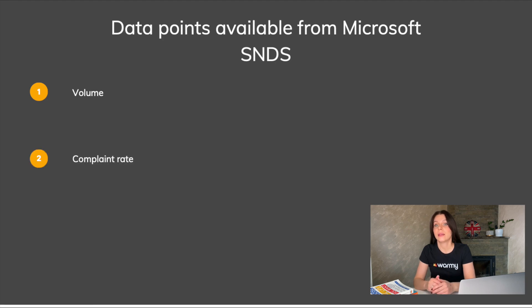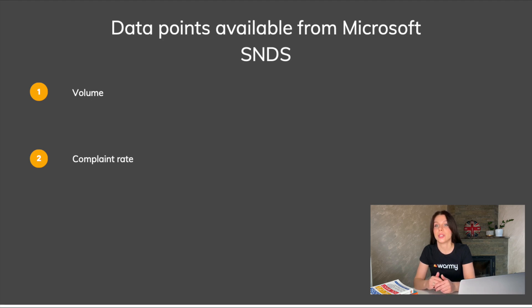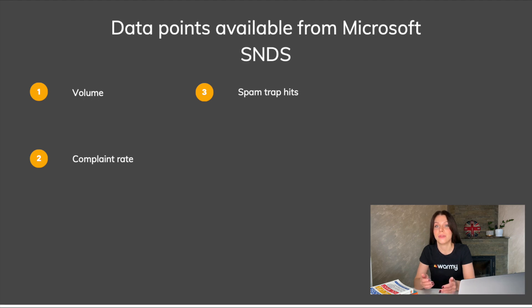Complaint rate: the complaint rate data point shows the percentage of emails reported as spam or junk by Outlook users. High complaint rates can negatively impact email deliverability, so this data point can help email senders identify and address potential issues with email content or sending practices. Spam trap hits: the spam trap hits data point shows the number of messages sent to known spam traps, which are email addresses used by ISPs to identify and block spam. High spam trap hits can indicate poor list hygiene or spammy sending practices, which can harm email deliverability.